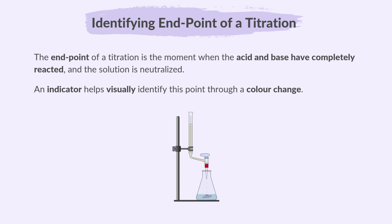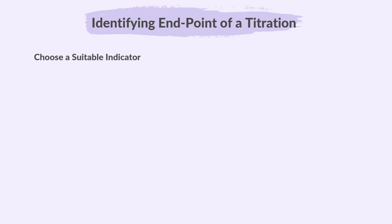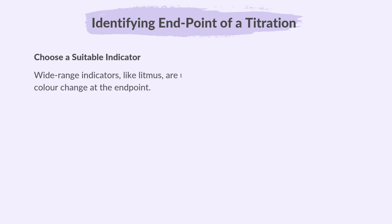Here's how it works. Choose a suitable indicator. Wide range indicators like litmus are unsuitable as they do not provide a sharp color change at the end point.